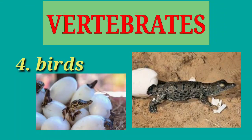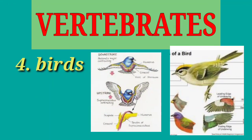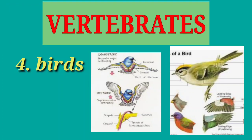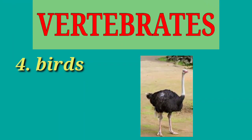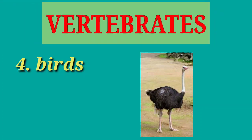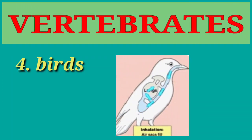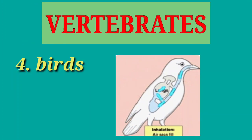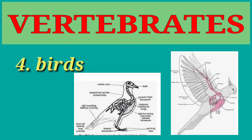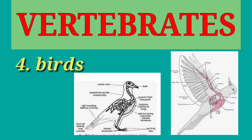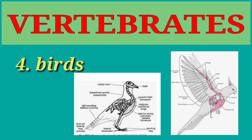Next are the birds. Birds have structures that enable them to fly; however, not all birds fly. The ostrich is an example of a flightless bird. The lungs are their major organ of respiration. They have a skeleton made up of strong but light bones, and legs for walking or running.